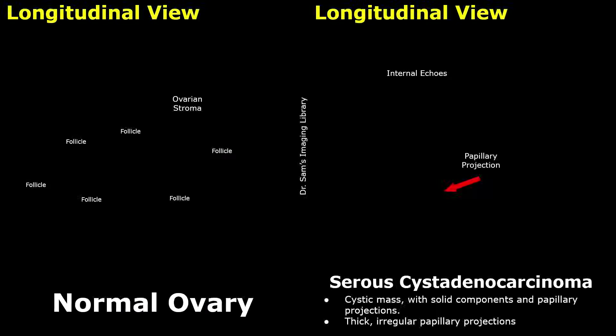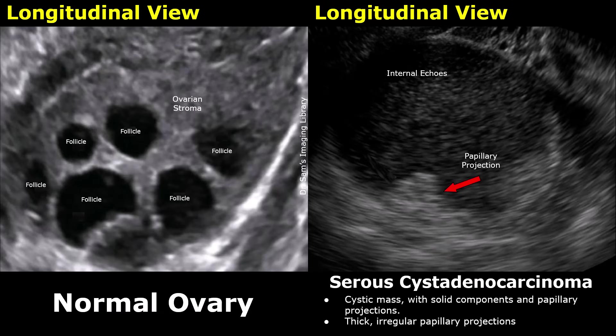Hello everyone, this is Dr. Sam and today we will be learning about the most common type of ovarian cancer, serous cystadenocarcinoma, on ultrasound. Serous cystadenocarcinoma, a malignant form of ovarian tumor, is the most common type of ovarian cancer. We will study its ultrasound appearances and compare them with normal ovaries for a better understanding.